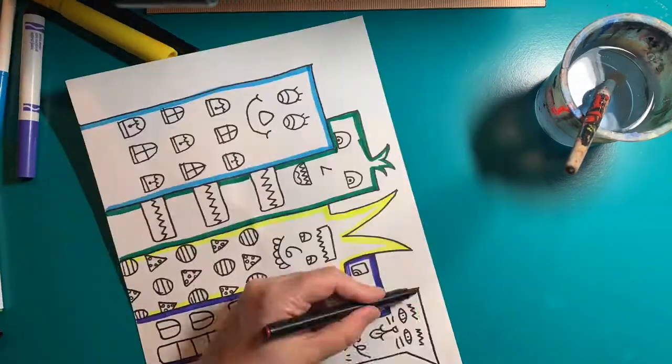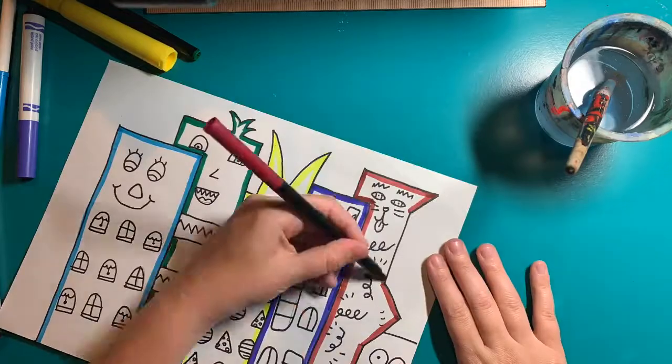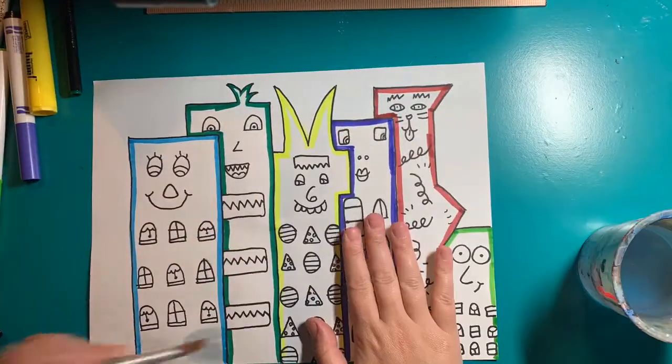Trace the outline of your buildings using these washable markers. Pick a different color for each building.